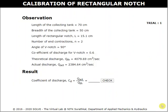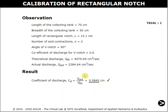Move to the next step to calculate the coefficient of discharge for this trial. The detailed observation and previously calculated parameters are given here. Calculate and enter the CD value within the given space. Click on check. The entered value is correct. Now, move to the next step.